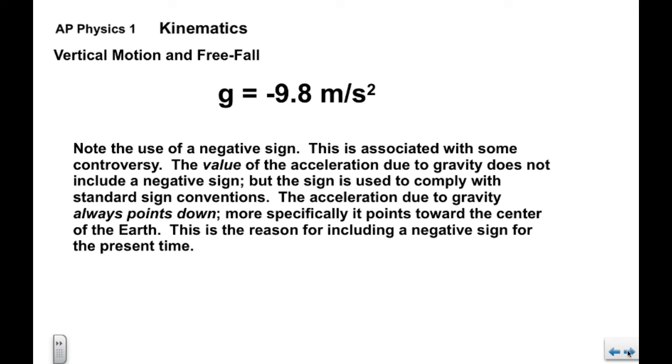Now, I want to take a look at what this negative sign means. There is some controversy associated with including it. The value of the acceleration due to gravity, the magnitude of course, does not have a negative sign. The sign is used to comply with standard sign conventions because the acceleration due to gravity always points down. Even when the object is moving upward, if it's in free fall, the acceleration due to gravity always points down. So this is the reason for including a negative sign for the time being.